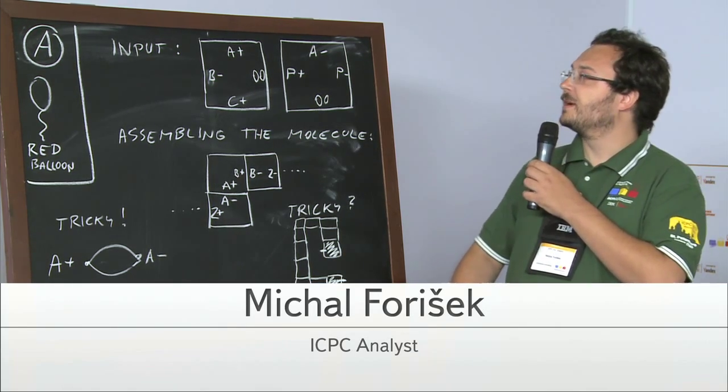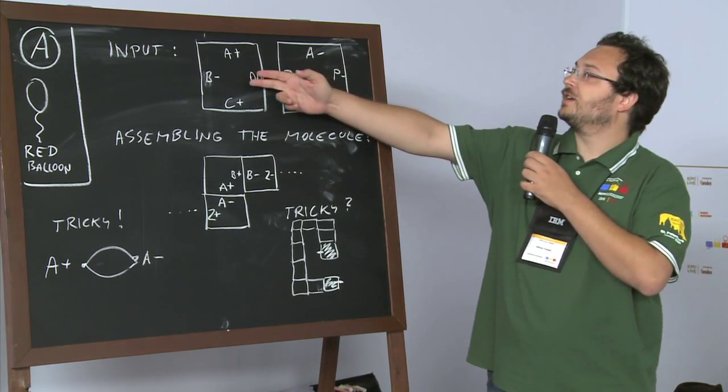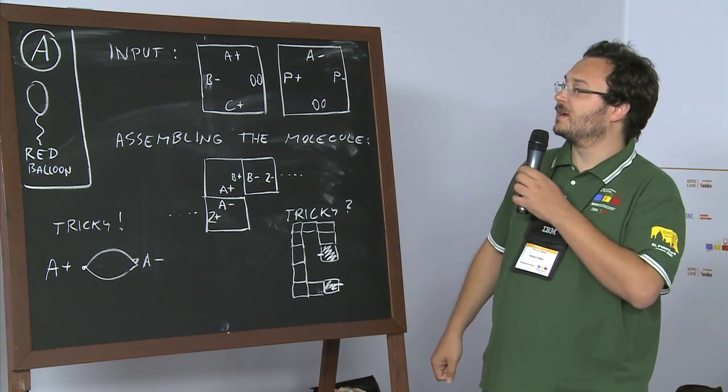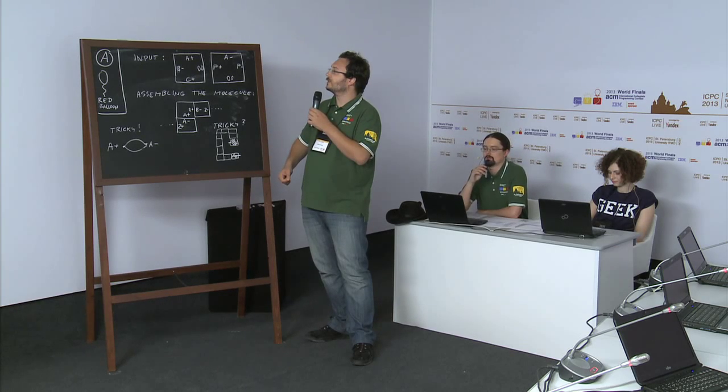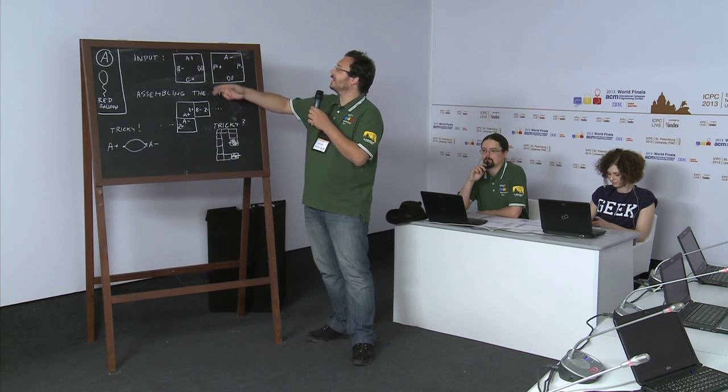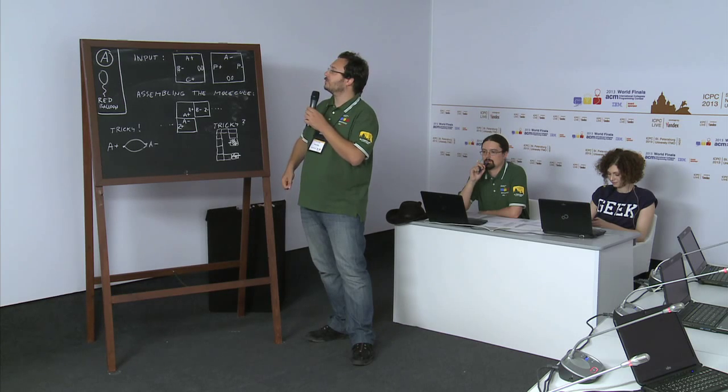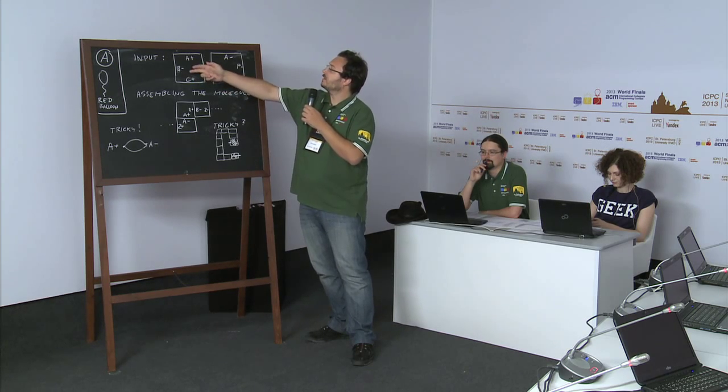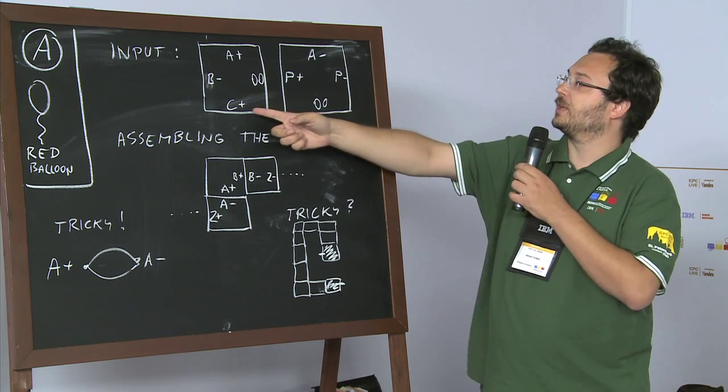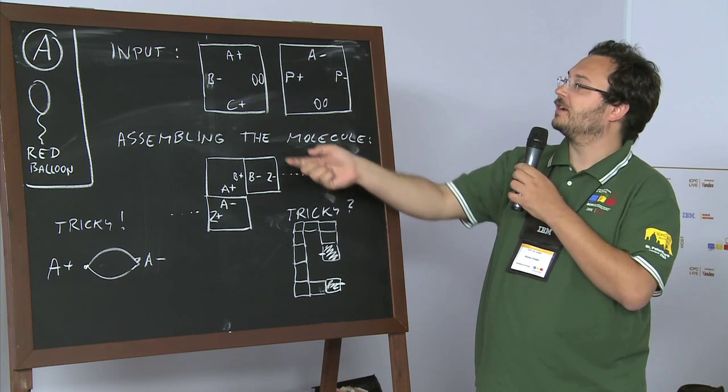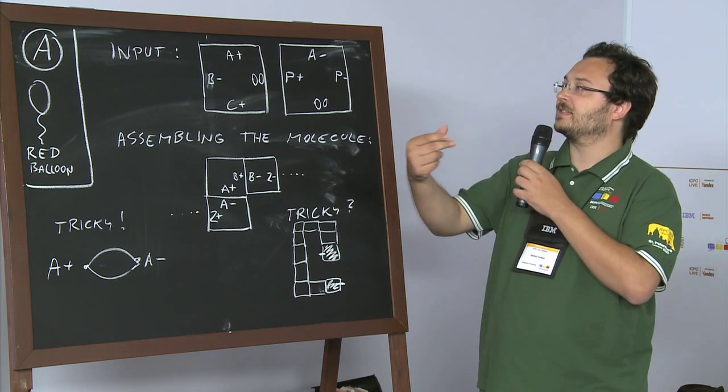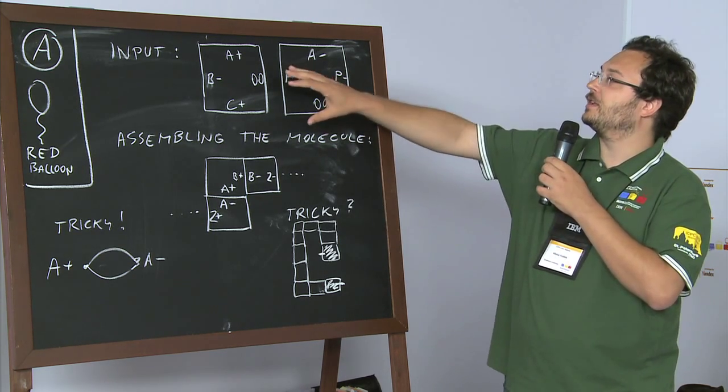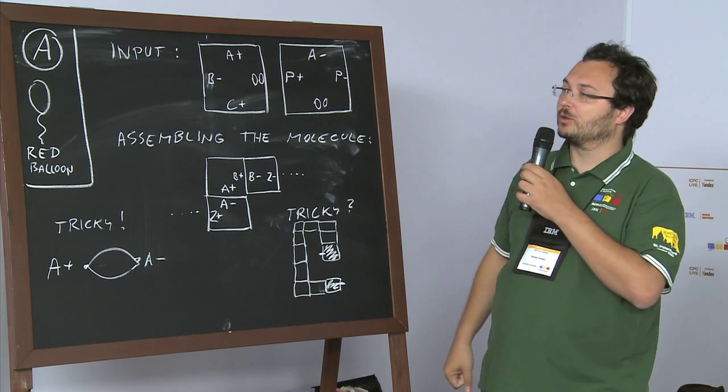Let me walk you through the problem. What you are given in the input are some molecules. To make the problem really simple, we assume that we have a spherical horse in the vacuum, or in this case we have molecules that are perfectly square. Each side is either labeled by a positive or a negative letter, or by double zero, which means this is a side that doesn't react, doesn't connect to other molecules.